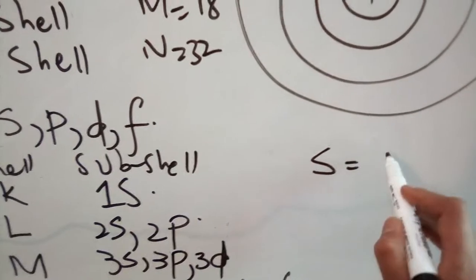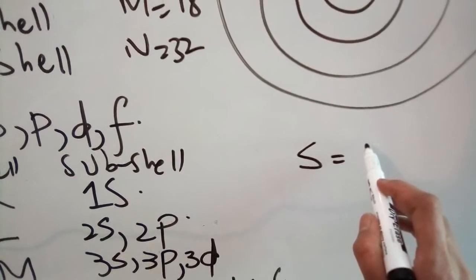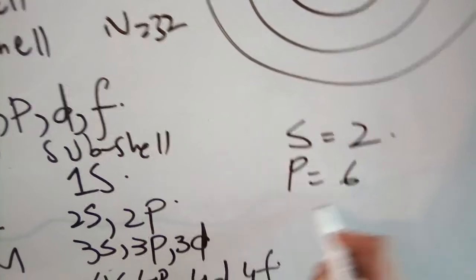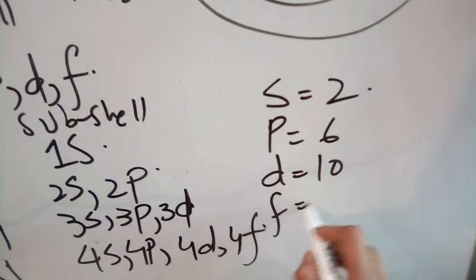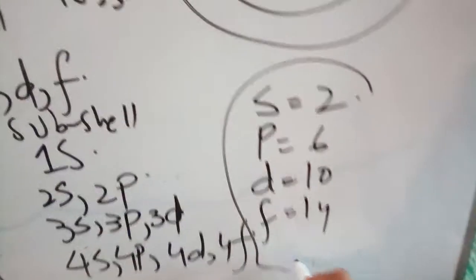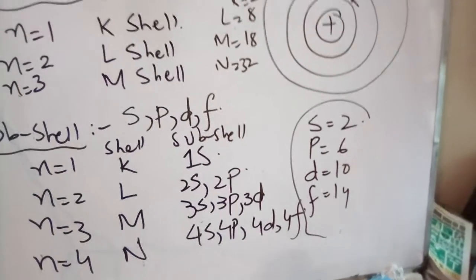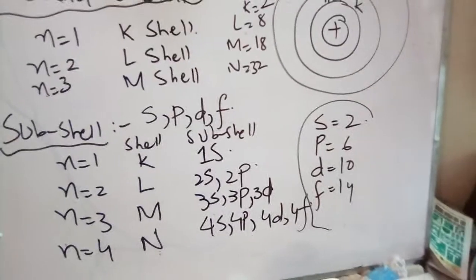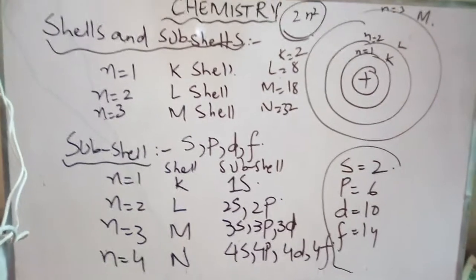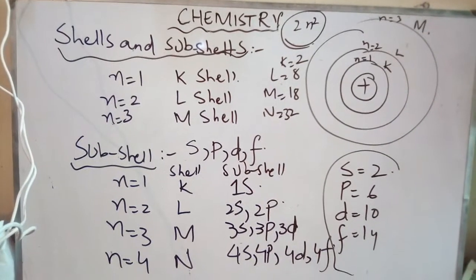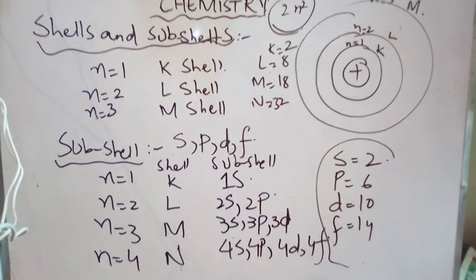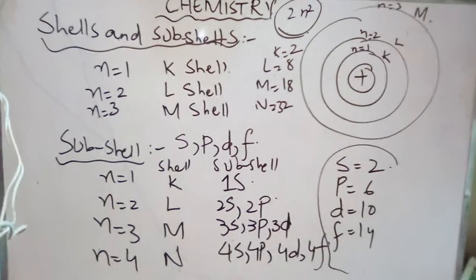Sub-shells can accommodate a certain number of electrons. For example, the S sub-shell can hold only 2 electrons, P holds 6, D holds 10, and F can hold 14 electrons. You should remember how many electrons each sub-shell can accommodate, because from this we move to our next topic — electronic configuration — which is very very important. If you remember this, then we can write electronic configurations.